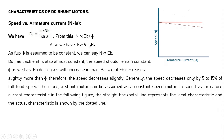To recap: when load increases, Ia increases, and since V and Ra are constant, Eb decreases. When Eb decreases, speed decreases. Meanwhile, flux also decreases due to armature reaction, which tries to increase speed and Eb. These opposing effects prevent large speed changes, keeping the shunt motor operating at nearly constant speed.